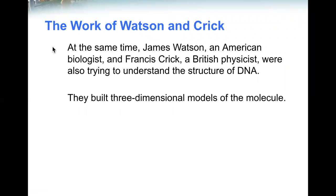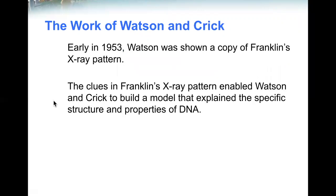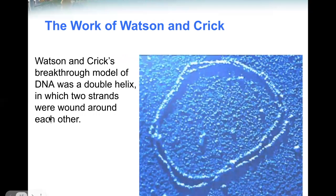At the time, James Watson, an American biologist, and Francis Crick, a British physicist, were also trying to understand the structure of DNA. They built three-dimensional models of the molecule. Early in 1953, Watson was shown a copy of Franklin's X-ray pattern. The clues in Franklin's X-ray pattern enabled Watson and Crick to build a model that explained the specific structure and properties of DNA. Watson and Crick's breakthrough model of DNA was a double helix in which two strands were wound around each other.